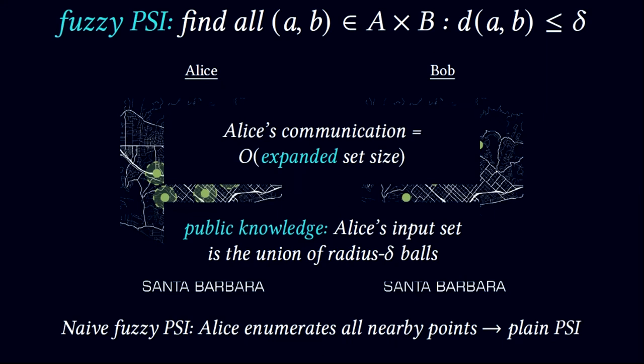However, unlike plain PSI, in this case there is some known structure over Alice's input set — it's a union of delta radius balls. So the question is: can we improve the communication complexity of PSI when there is a known structure over one of the party's input sets?